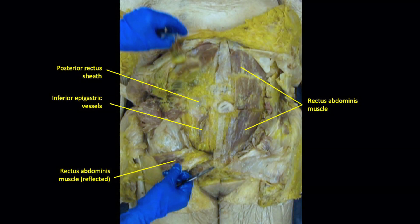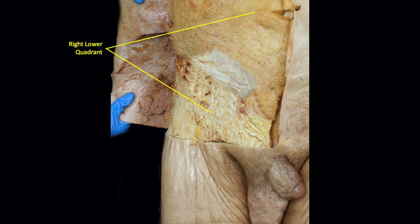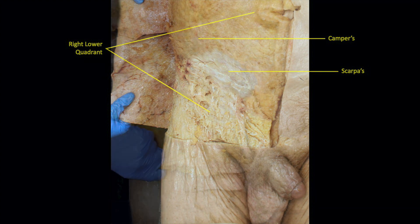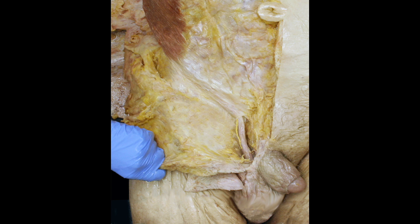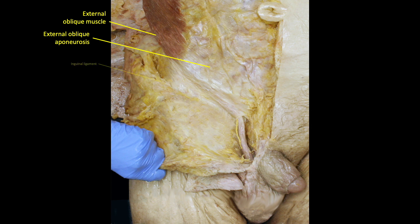This concludes the general survey of the anterior abdominal wall. Focusing again on the lower right quadrant, we can clearly observe the two distinct layers of superficial fascia: the fatty layer of Camper's and the membranous layer of Scarpa's, which is even more prominent in the living. After completely removing the superficial fascia, we can see the external oblique muscle, its aponeurosis, and its inferior border — the inguinal ligament.